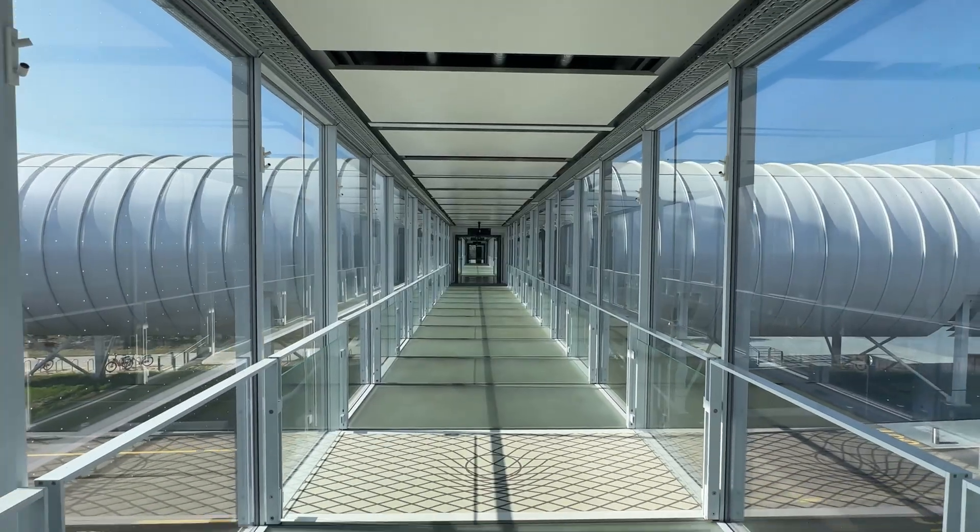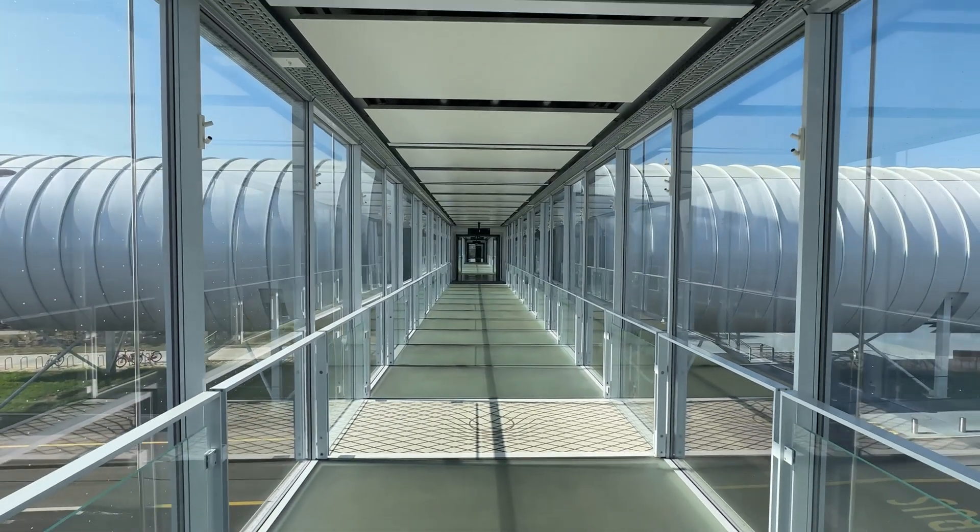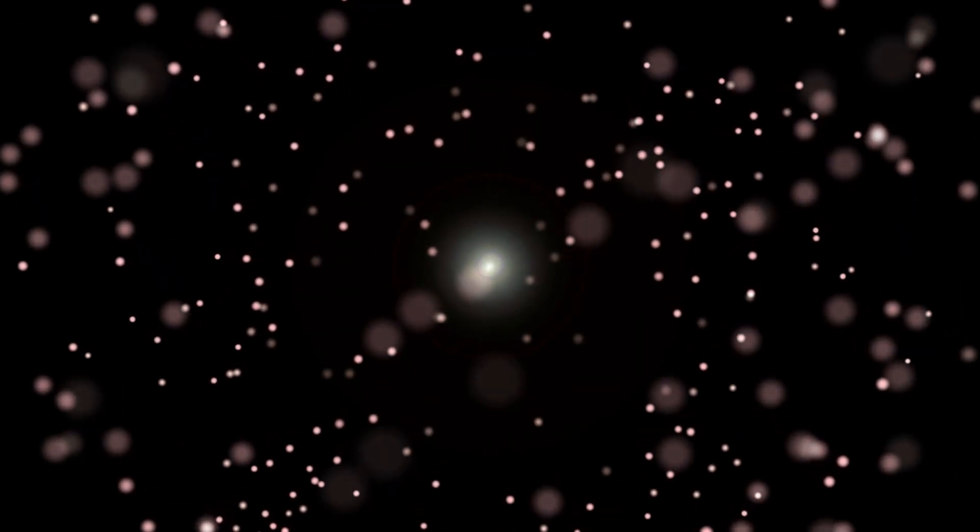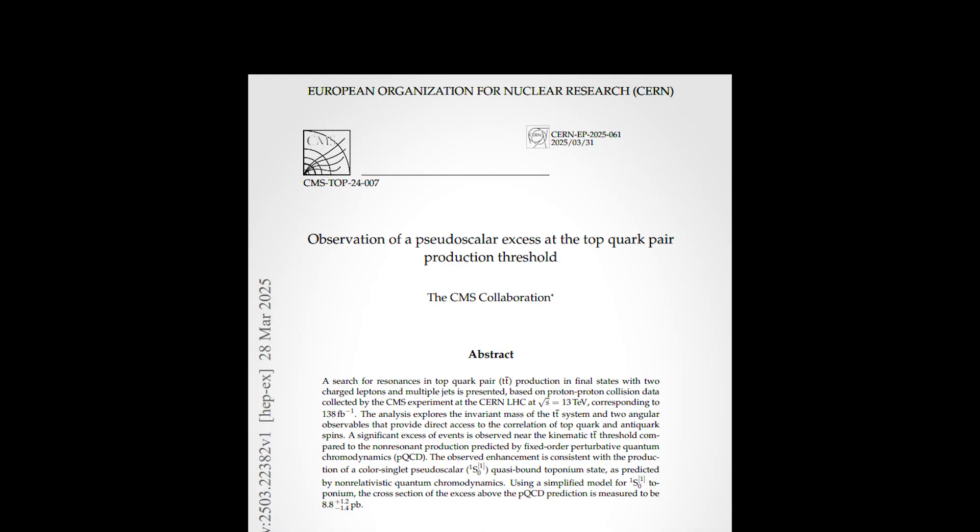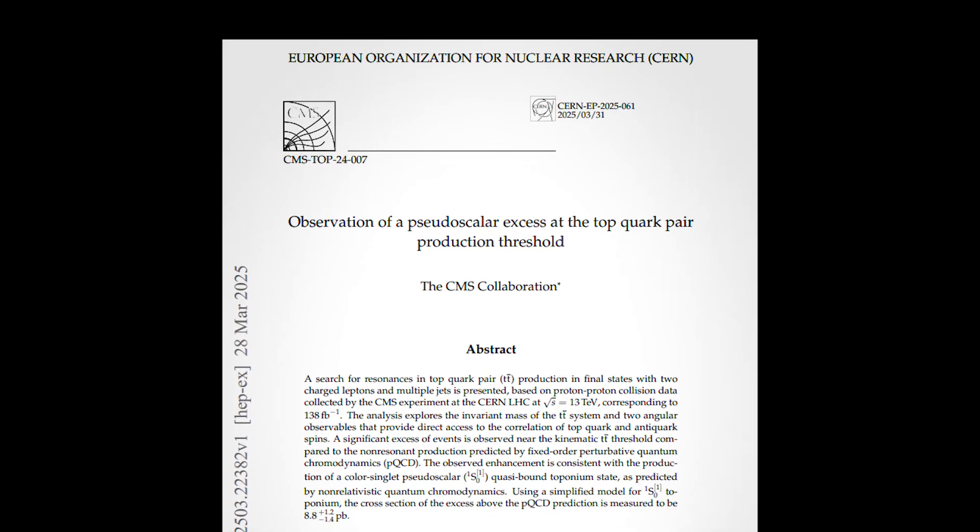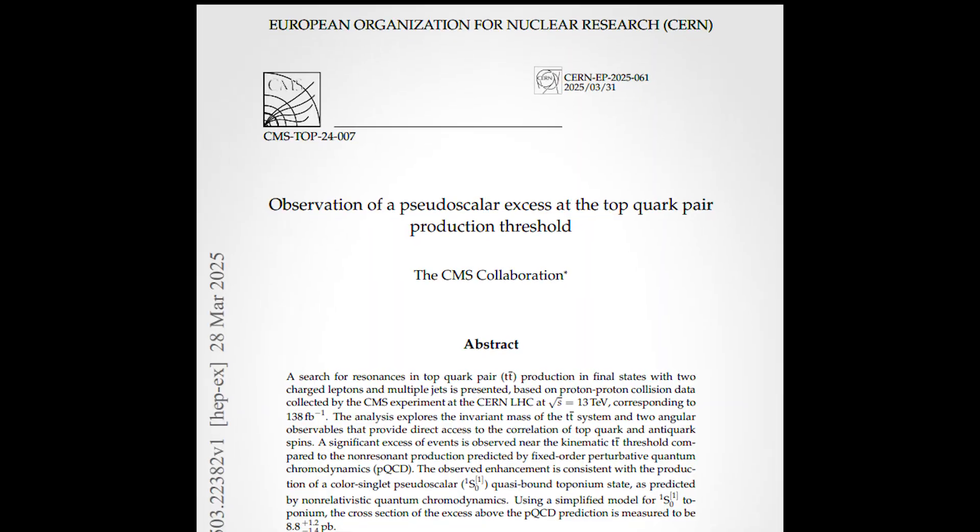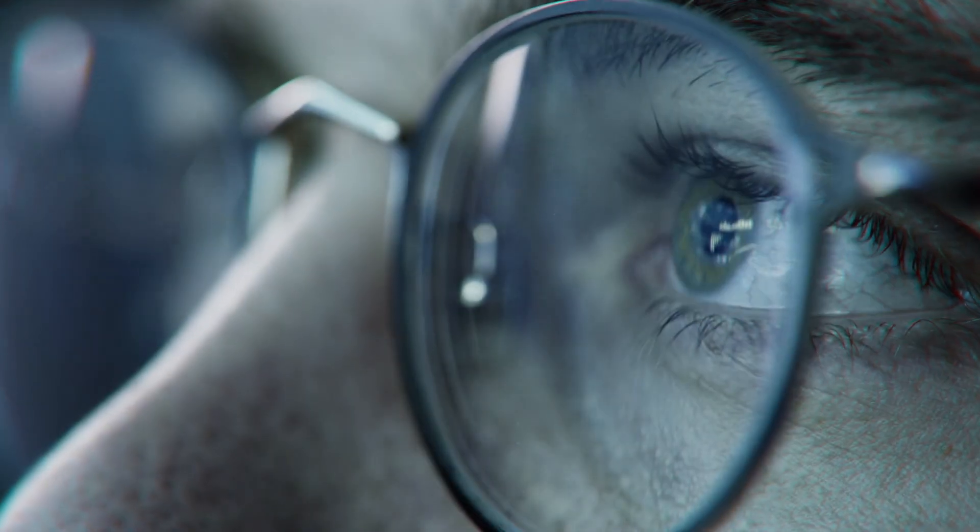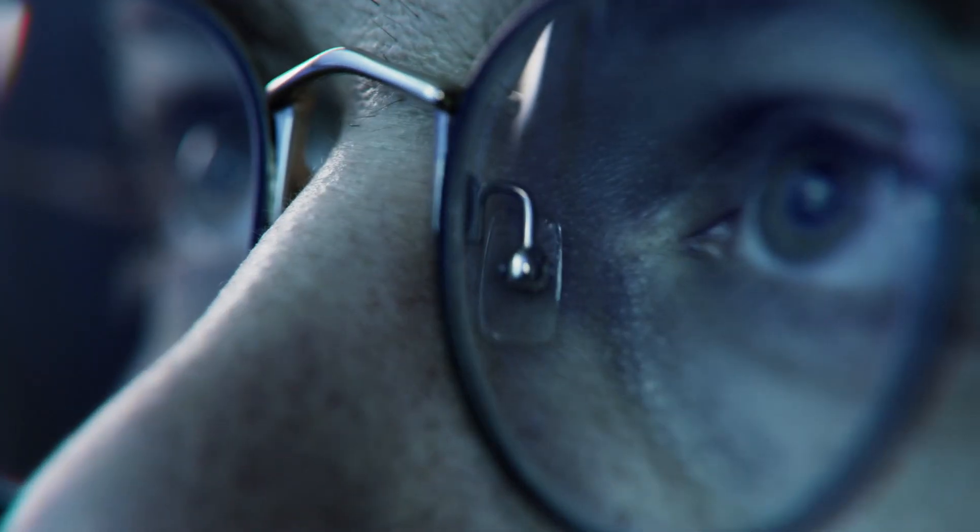In particular, they were interested in events where top and anti-top quarks were produced. While these events are rare and extremely energetic, the CMS detector started picking up something strange between 2016 and 2018. There was an unexpected excess of top-anti-top pairs near a very specific energy threshold. The kind of excess that made theorists raise their eyebrows.